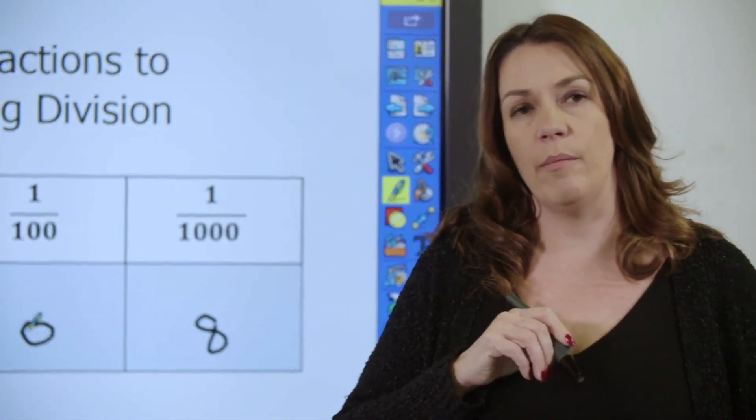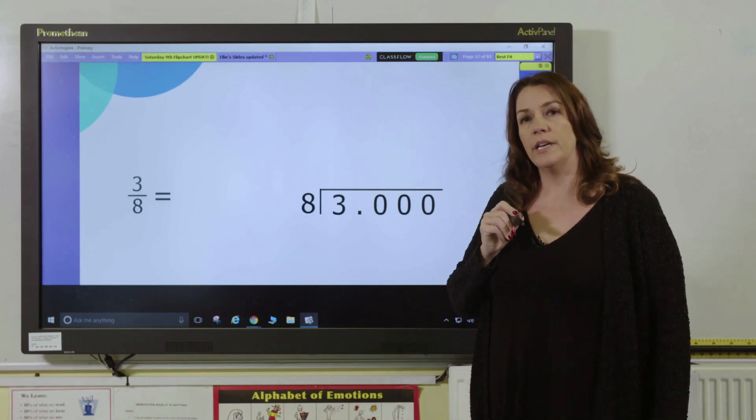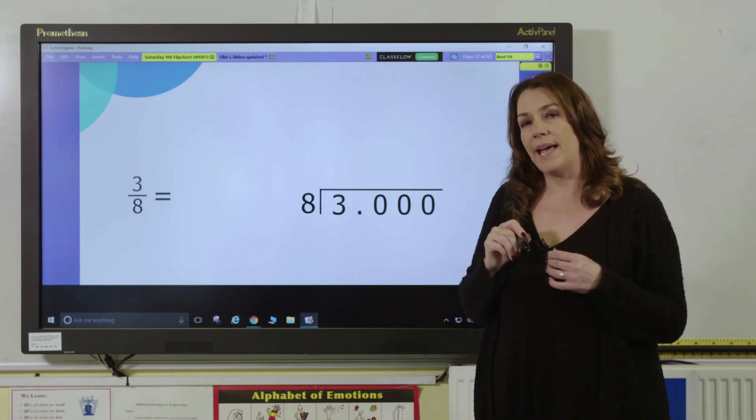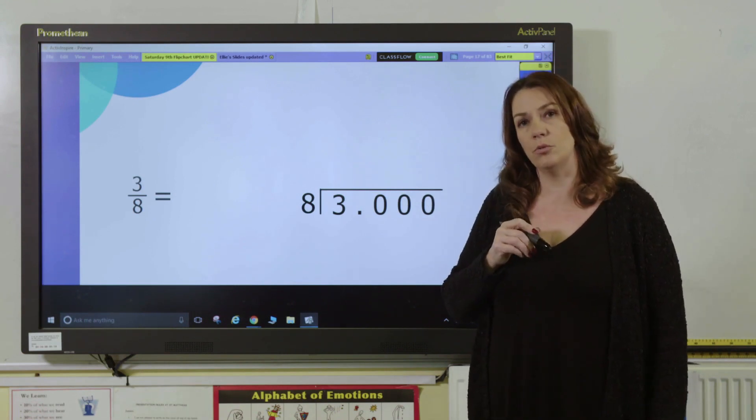But what about something a bit more difficult? Here I have the fraction 3/8, so I need to divide 3 by 8. I can't do that in any other way other than using something like the bus stop method and short division.